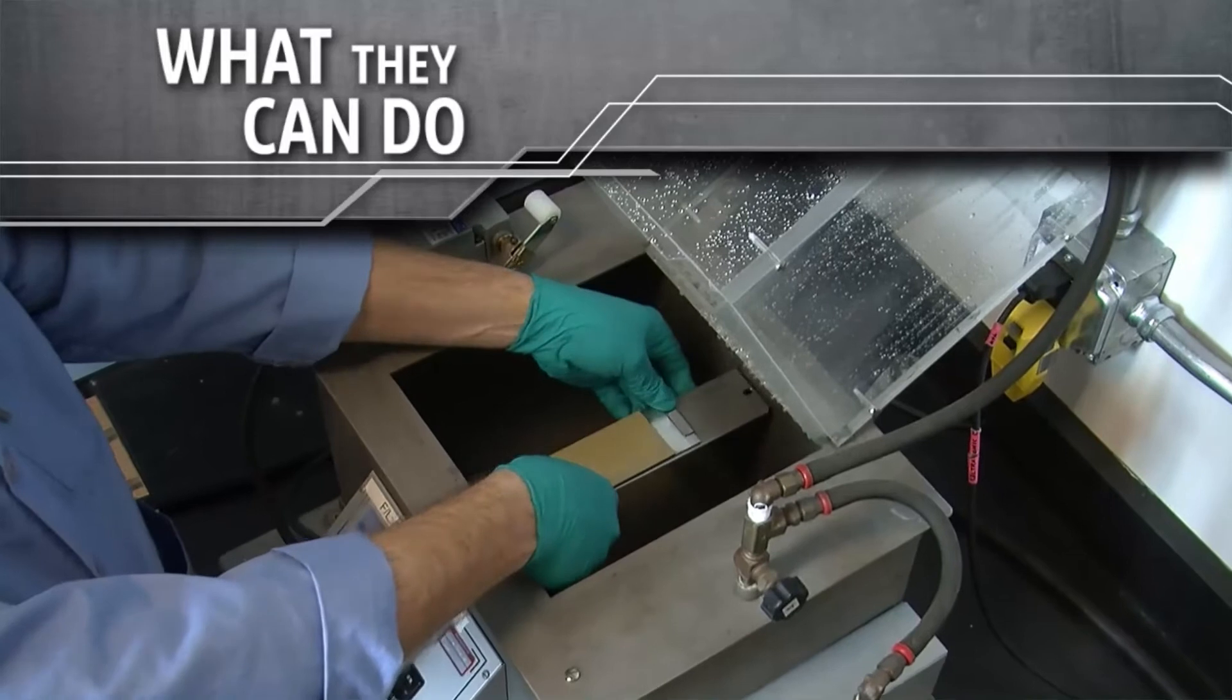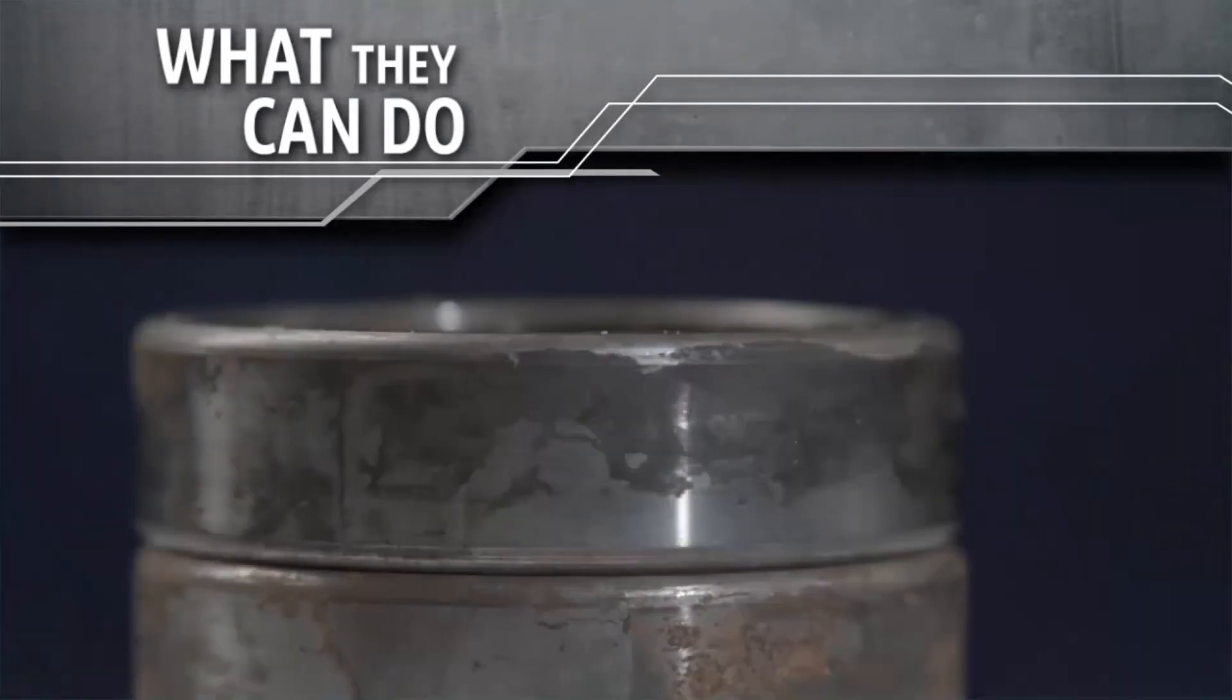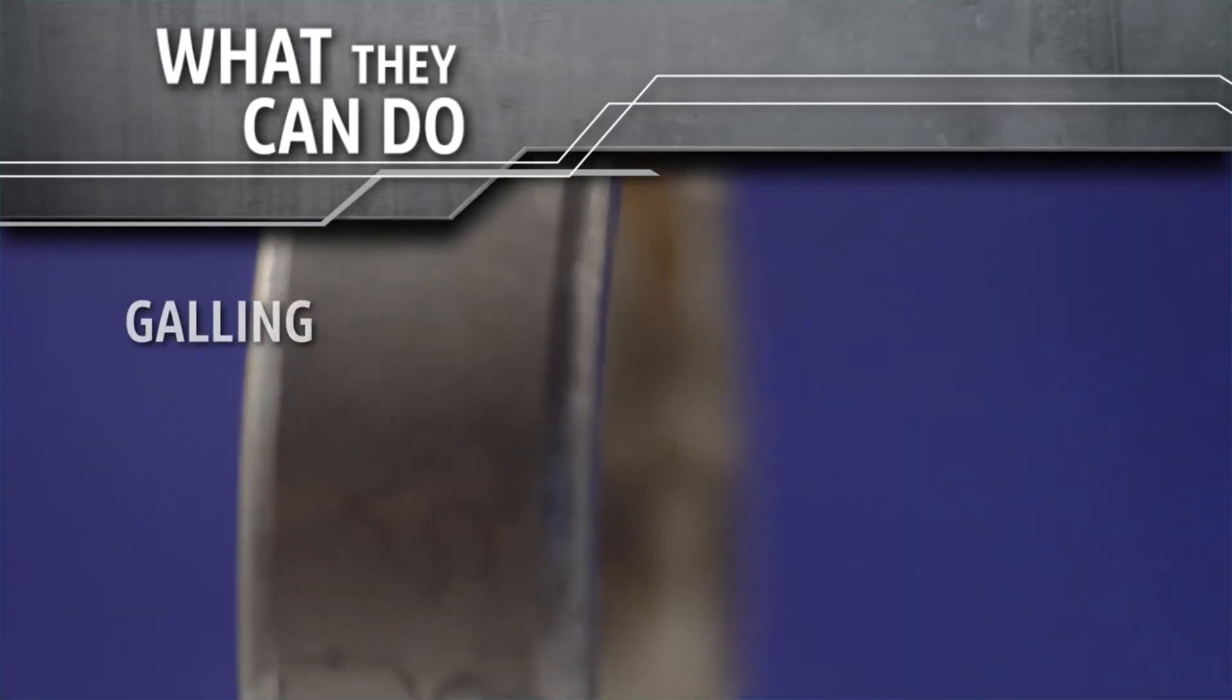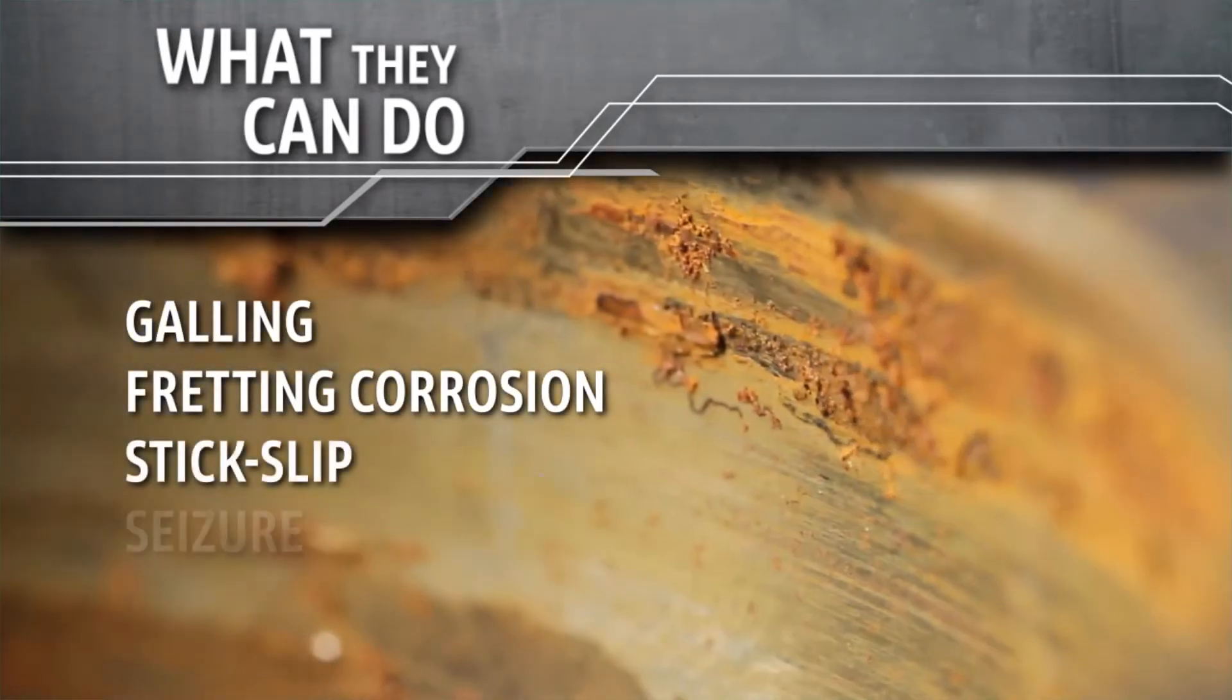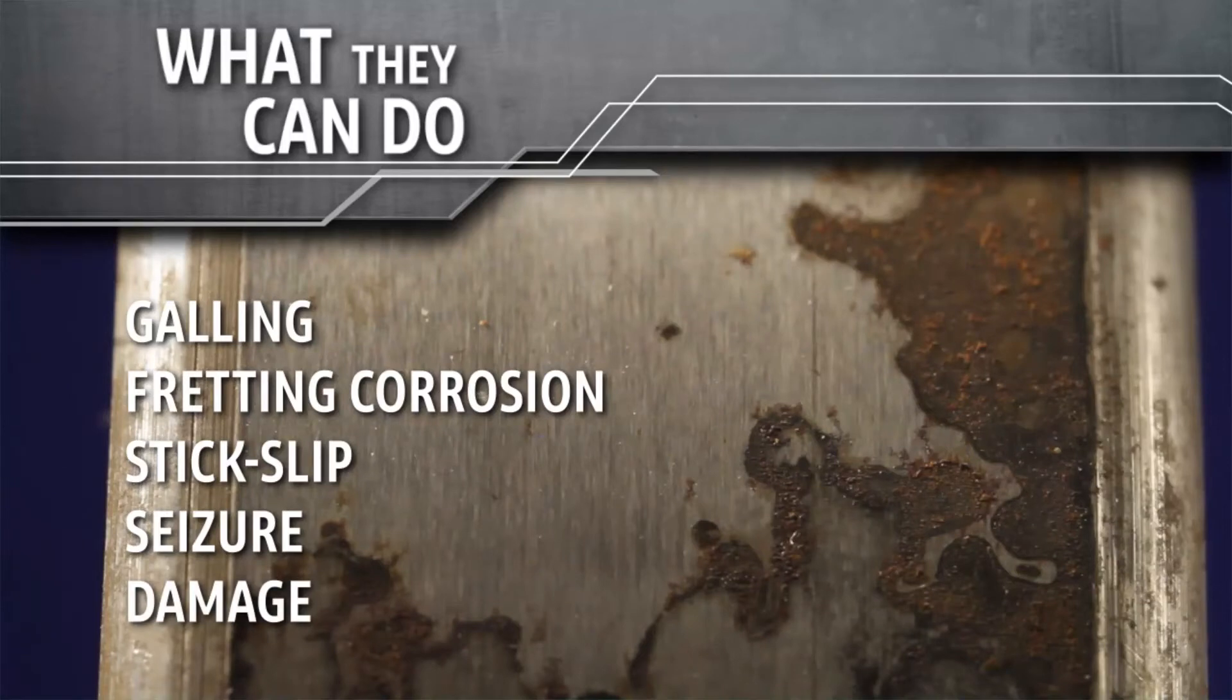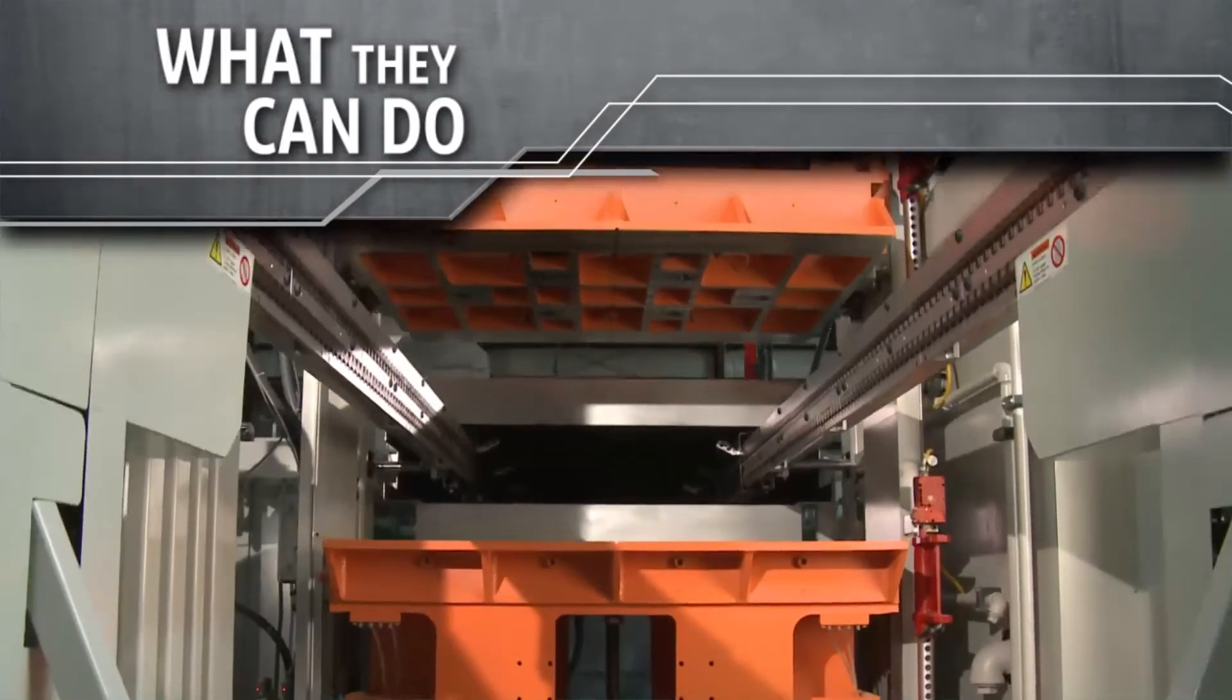They protect from galling, fretting, corrosion, stick slip, and seizure or damage. Controlling friction and wear on your equipment can help you save energy, extend lubrication intervals, reduce maintenance, cut downtime, and maintain productivity.